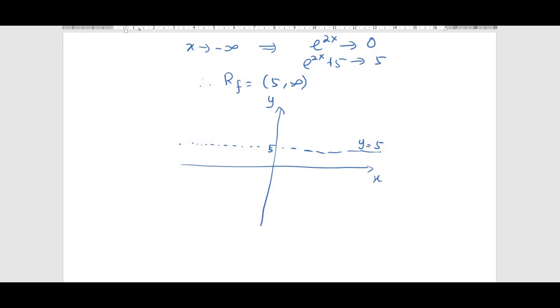But what about the y-intercept? To get the y-intercept, when x equals 0, you will get f(x) = 6. So this is the y-intercept. As x approaches negative infinity, it will approach 5.